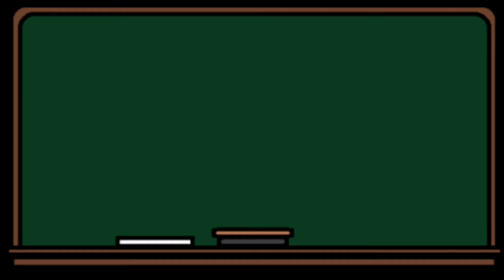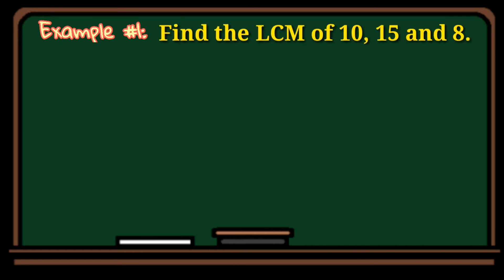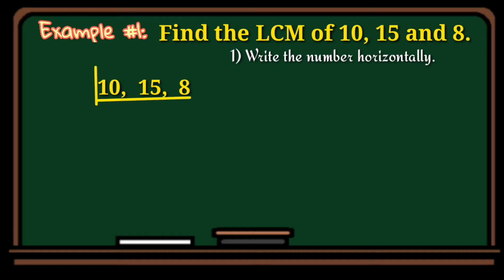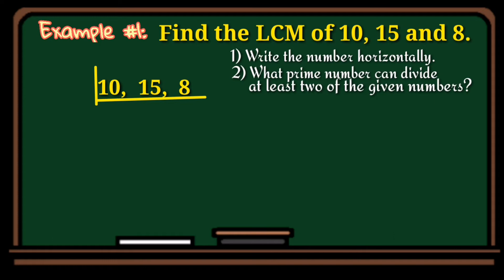Example number one: find the least common multiple of 10, 15, and 8. First, write the numbers 10, 15, and 8 horizontally separated by commas. Then look for a prime number that can divide at least two of the given numbers. We have 10 and 8 which are divisible by 2. So 10 divided by 2 is 5, 15 divided by 2 cannot be divided so bring it down, and 8 divided by 2 is 4.